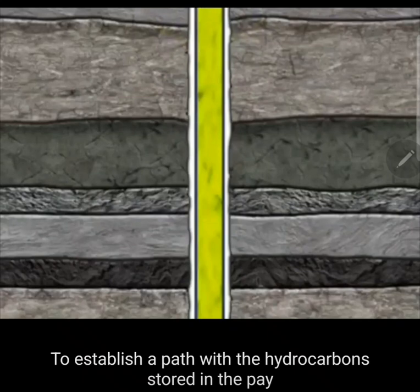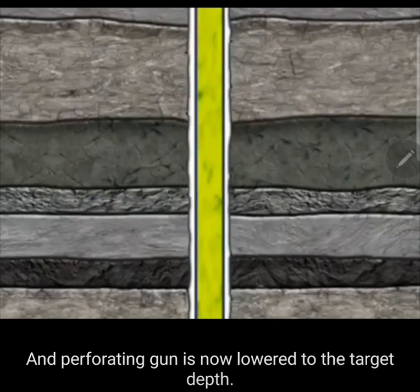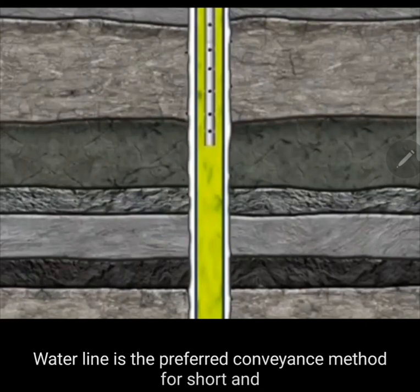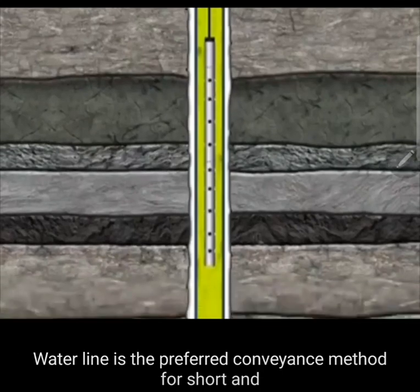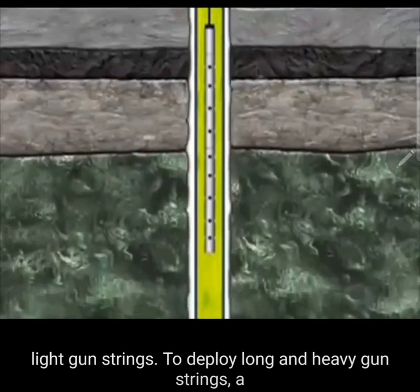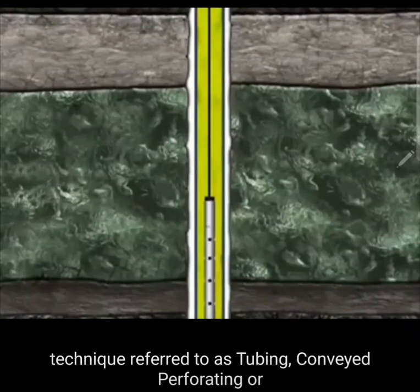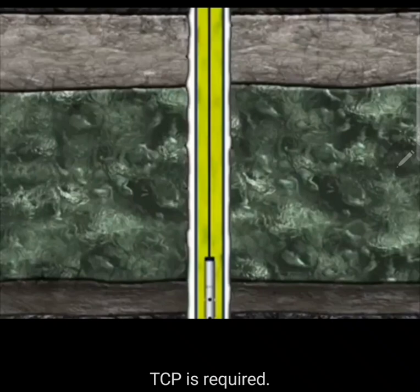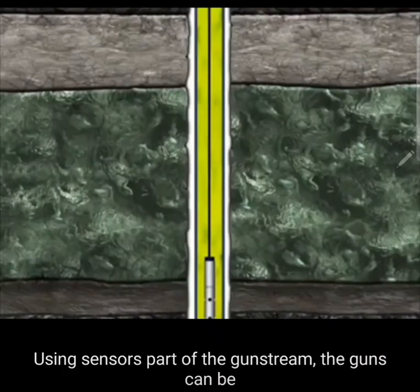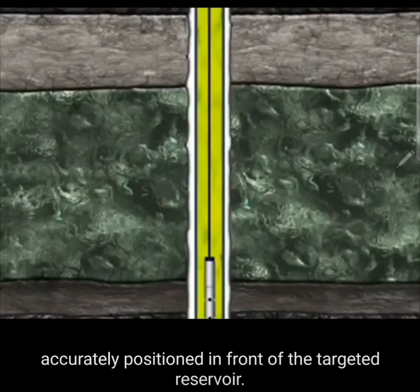To establish a path to the hydrocarbons stored in the pay zone, a perforating gun is lowered to the target depth. Wireline is the preferred conveyance method for short and light gun strings. To deploy long and heavy gun strings, a technique referred to as tubing conveyed perforating, or TCP, is required. Using sensors that are part of the gun string, the guns can be accurately positioned in front of the targeted reservoir.